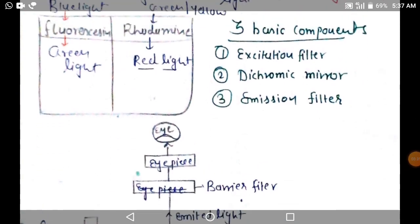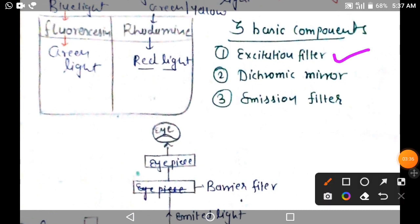We are going to talk about three basic components. First is the excitation filter, second is the dichromic mirror, and third is the emission filter or barrier filter. All these filters and components are only present in fluorescence microscopy, not in any other microscopy.